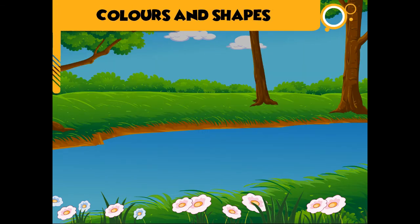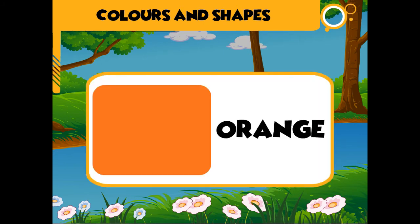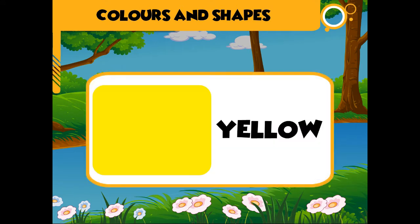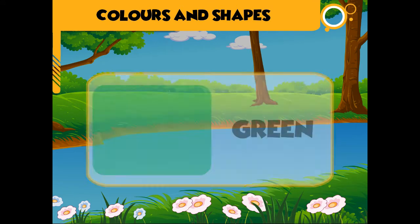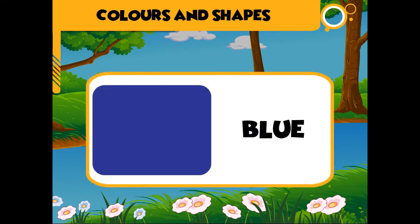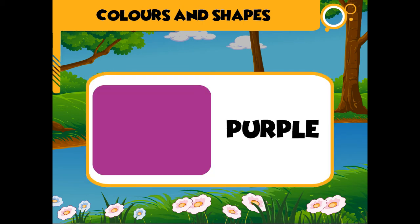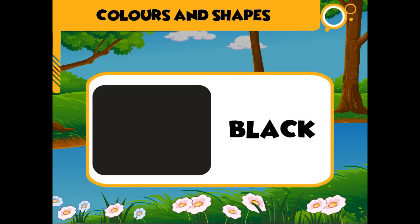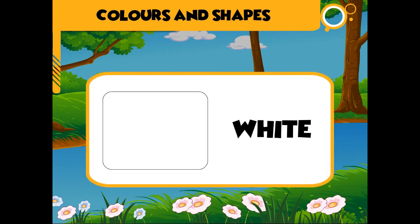Colors and shapes. Colors: red, orange, yellow, green, blue, pink, purple, brown, black, gray, white.